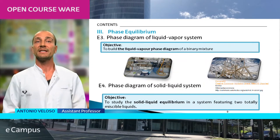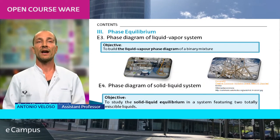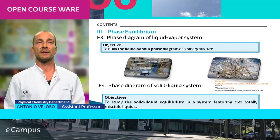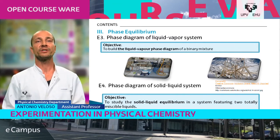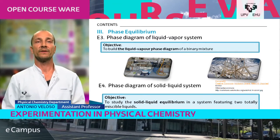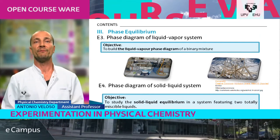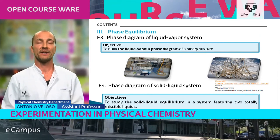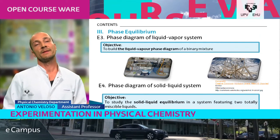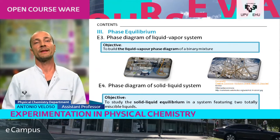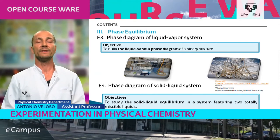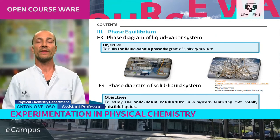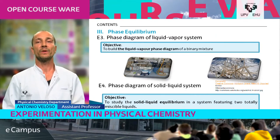The third lesson is about phase equilibrium, and here we have two different experiments. The first one is entitled Phase Diagram of a Liquid-Vapor System, with the main objective to build the liquid-vapor phase diagram of a binary mixture. The second one is about the Phase Diagram of a Solid-Liquid System, aiming to study the solid-liquid equilibrium in a system featuring two totally miscible liquids.